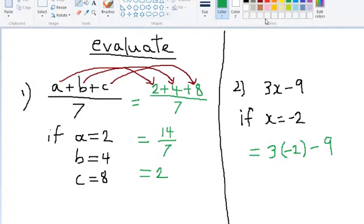As you can see, the x has changed into negative 2. The other numbers remain the same. The 3 remains and the negative 9 remains because they are constants.